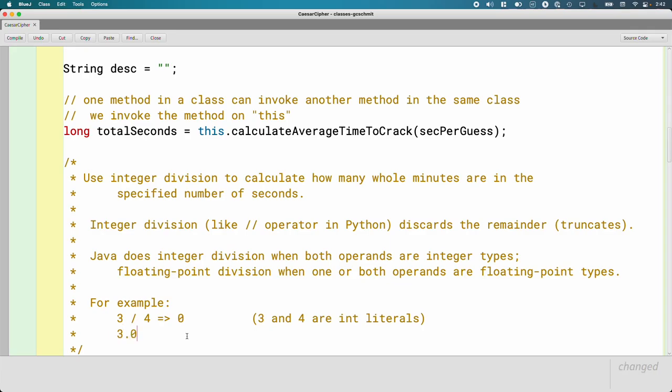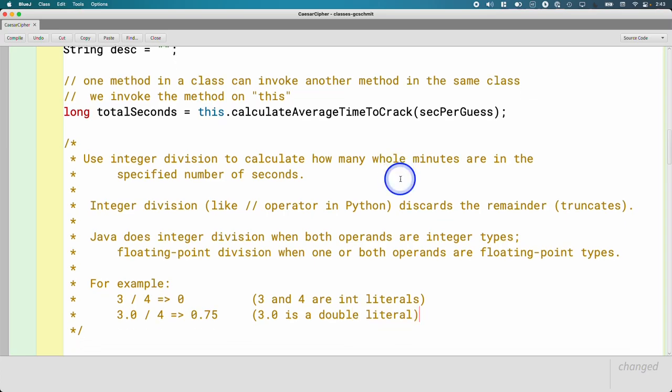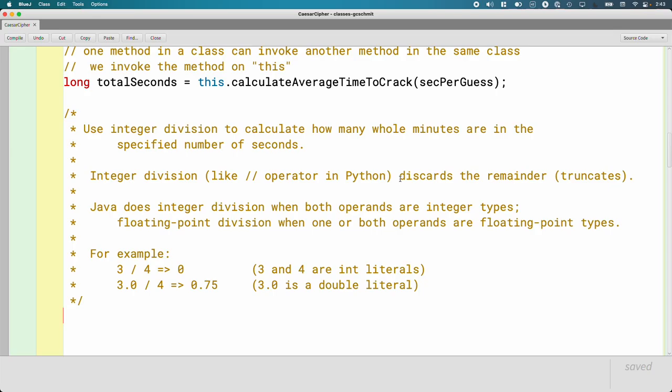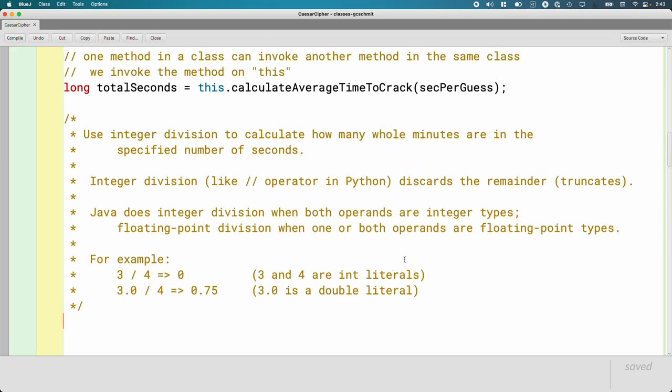Here's another example: 3.0 divided by 4 evaluates to 0.75. The reason is that 3.0, because of the decimal point, is a double literal. If we want to force floating point division, often we just tack on a 0.0 to make it a double literal to ensure it happens.